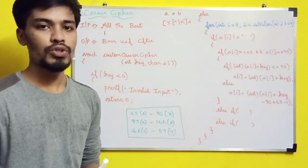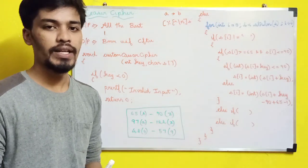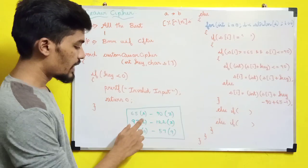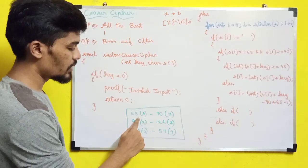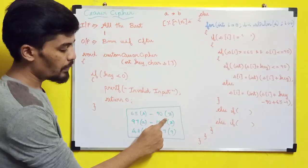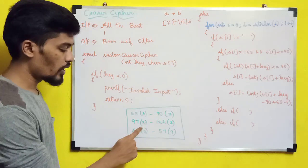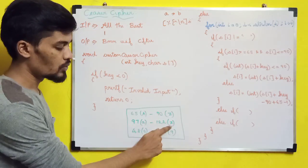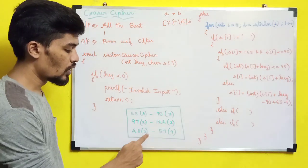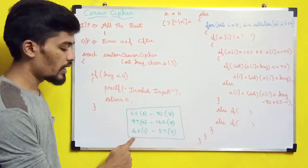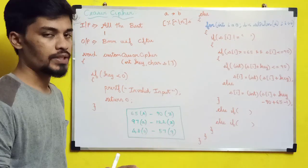The ASCII values are: capital A is 65, capital Z is 90, small a is 97, small z is 122, digit '0' is 48, and digit '9' is 57.